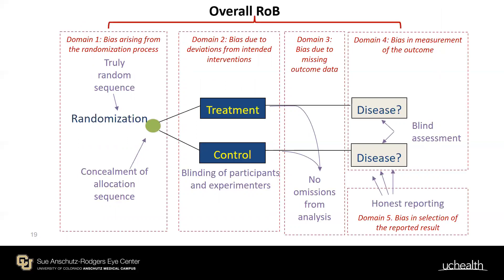The tool covers five domains: randomization process, deviations from intended intervention, missing outcome data, measurement of the outcome, and selection of reported results. Unlike the previous version, you must now produce an overall risk of bias rating. By default the algorithm assigns the highest domain rating as the overall — but you can override this. 'Unclear risk of bias' no longer exists; it's now 'some concerns.' If multiple domains have some concerns, you may upgrade the overall to high risk of bias.